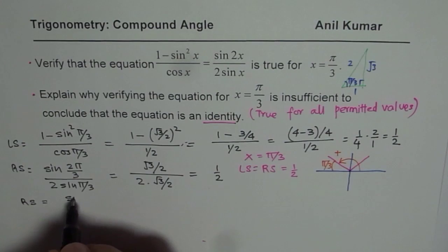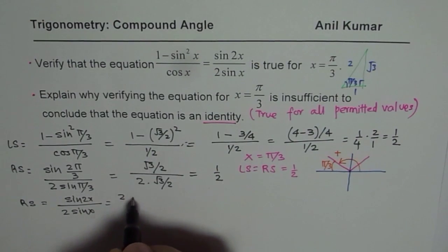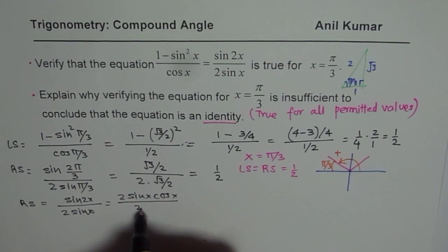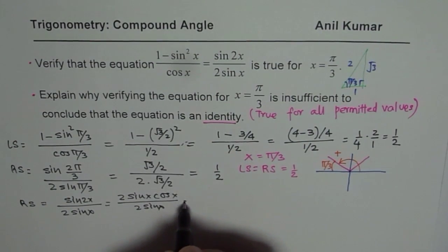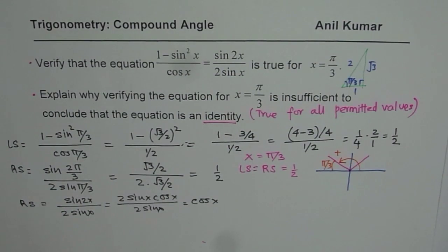Right side is (sin 2x)/(2 sin x). Sin 2x could be written as 2 sin x cos x. And we have 2 sin x in the denominator. They cancel out, so it equals cos x for us.